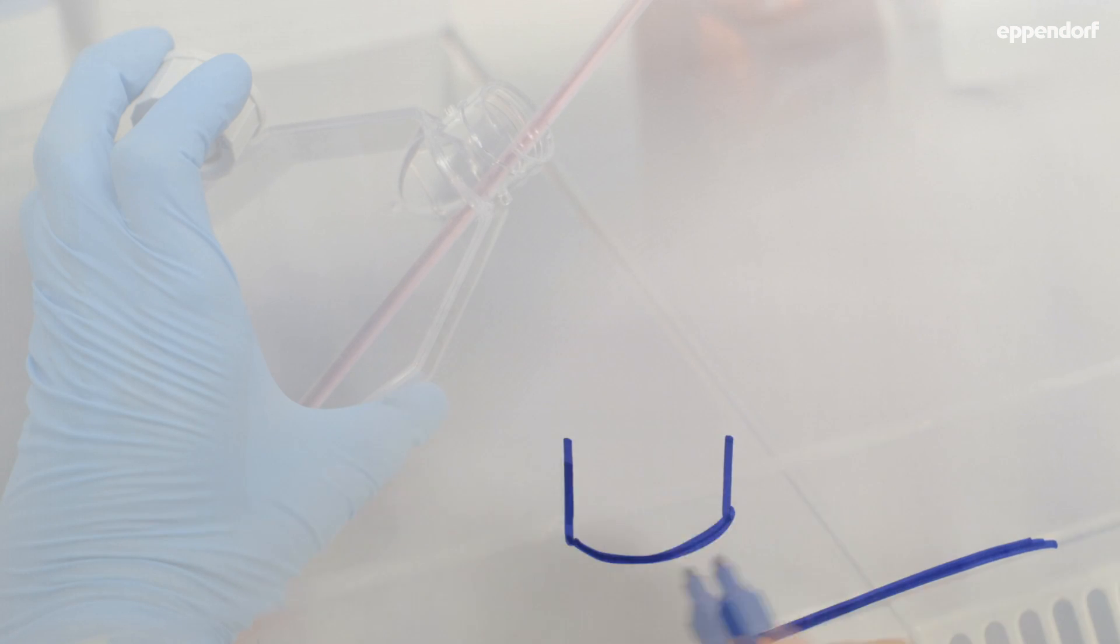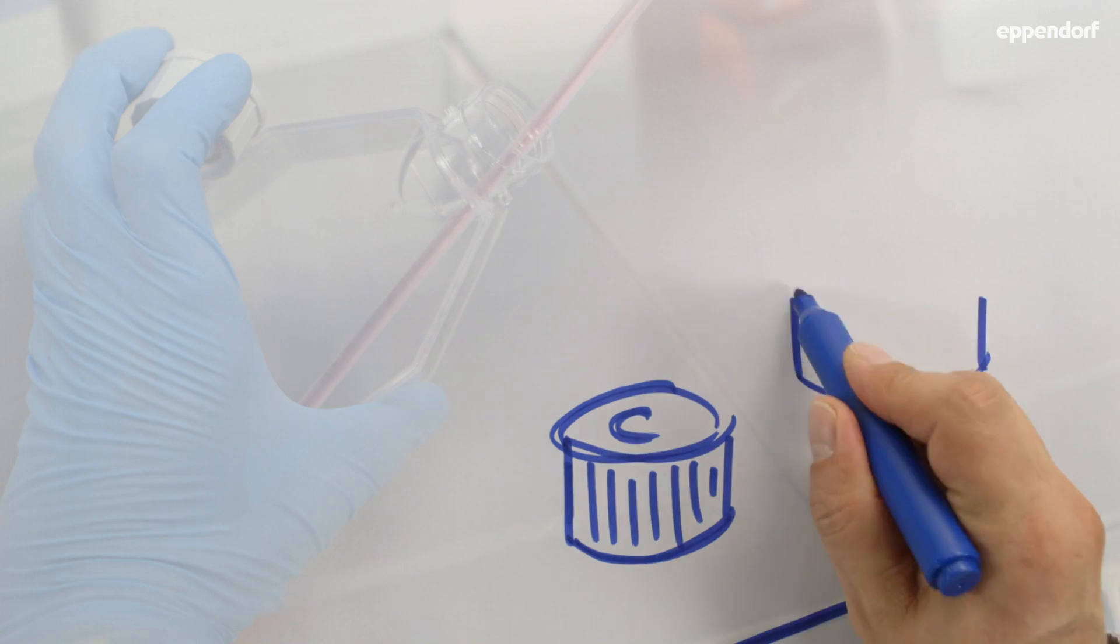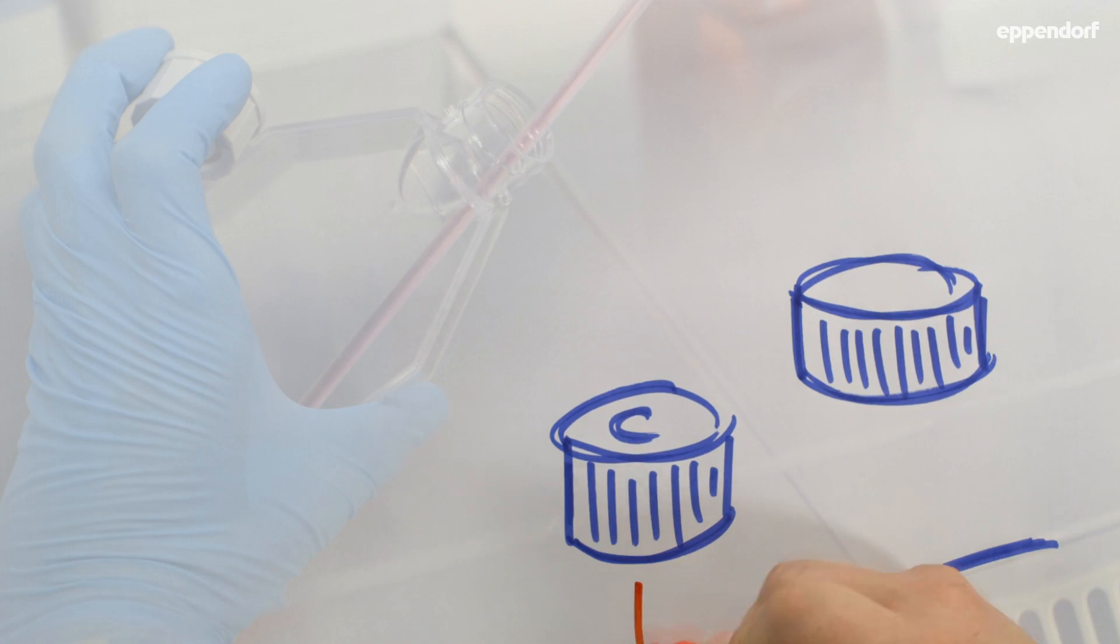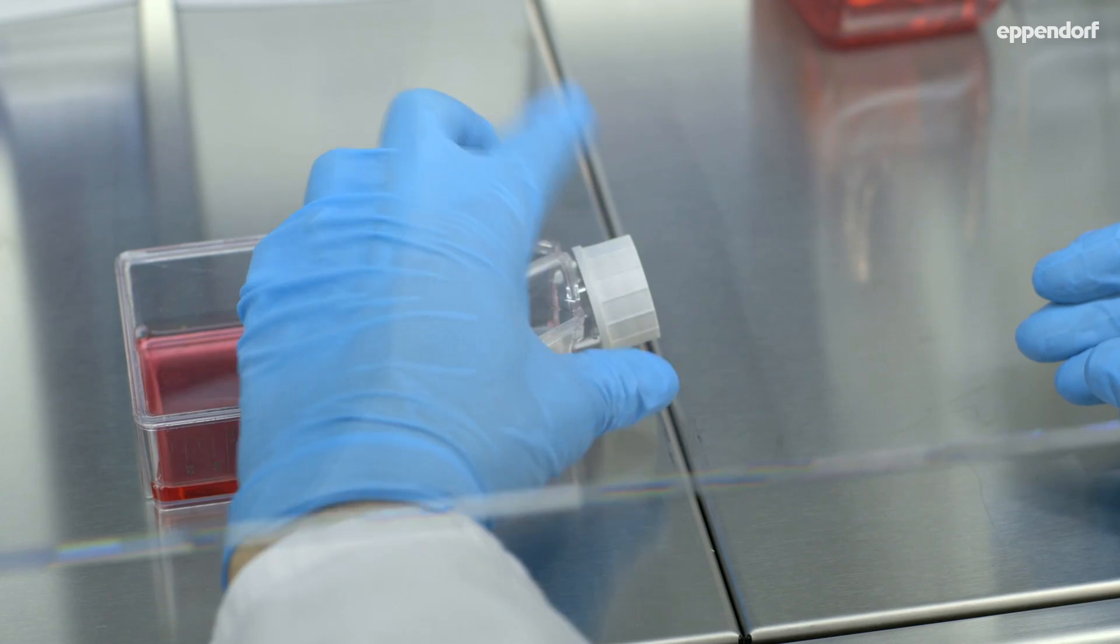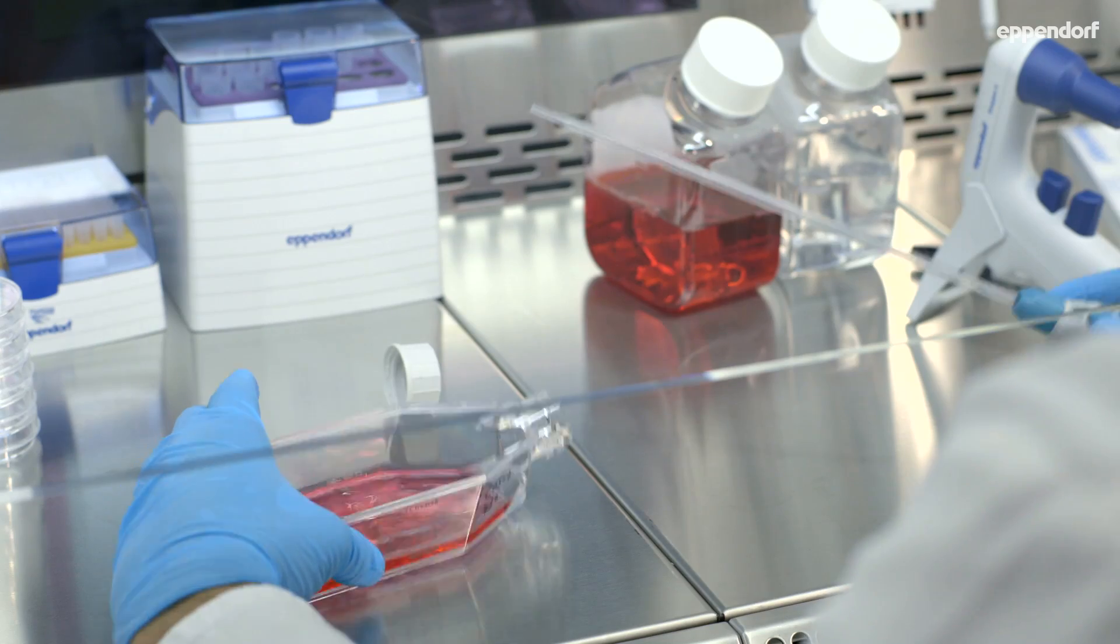Sometimes it is necessary to place the cap to one side. If the cap is placed inside down, sterility cannot be absolutely guaranteed. If the cap is placed inside up, airborne particles or droplets can enter the cap. By placing it onto its side, it is not in contact with the airflow or with the work surface.